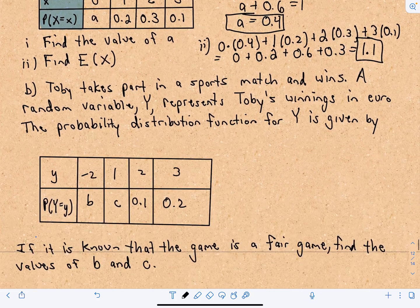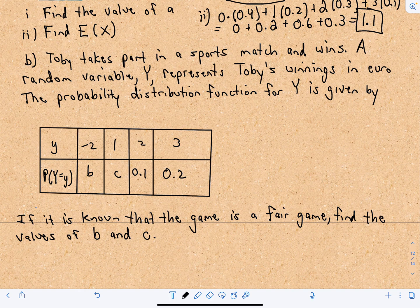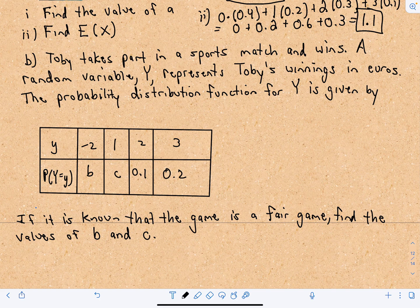Okay, so for part B, it says Toby takes part in a sports match and wins. Good for Toby. A random variable Y represents Toby's winnings in euros.